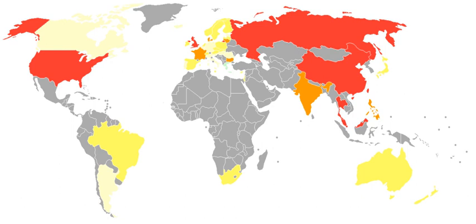On August 22, 1972, the Alaska Right of Privacy Amendment, Amendment 3, was approved with 86% of the vote in support of the legislatively referred constitutional amendment. Article 1, Section 22 of Alaska's Constitution states: "The right of the people to privacy is recognized and shall not be infringed. The legislature shall implement this section."